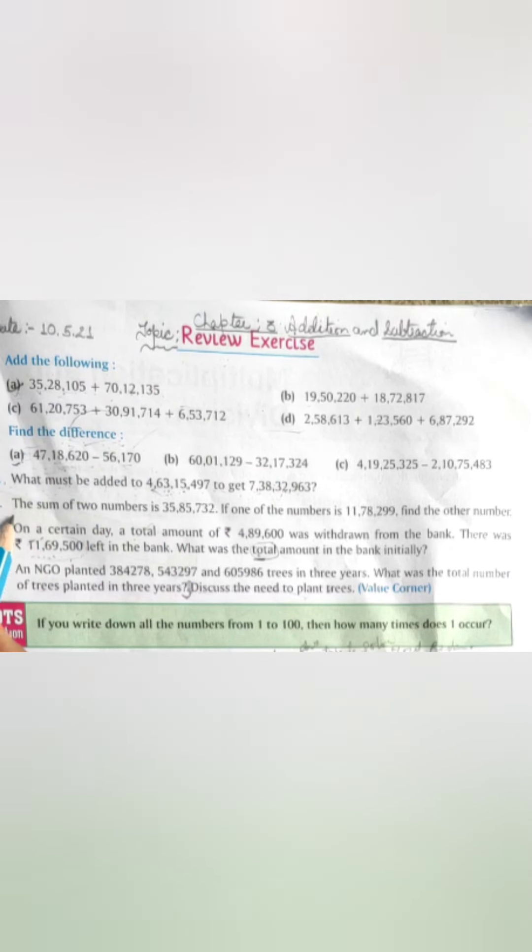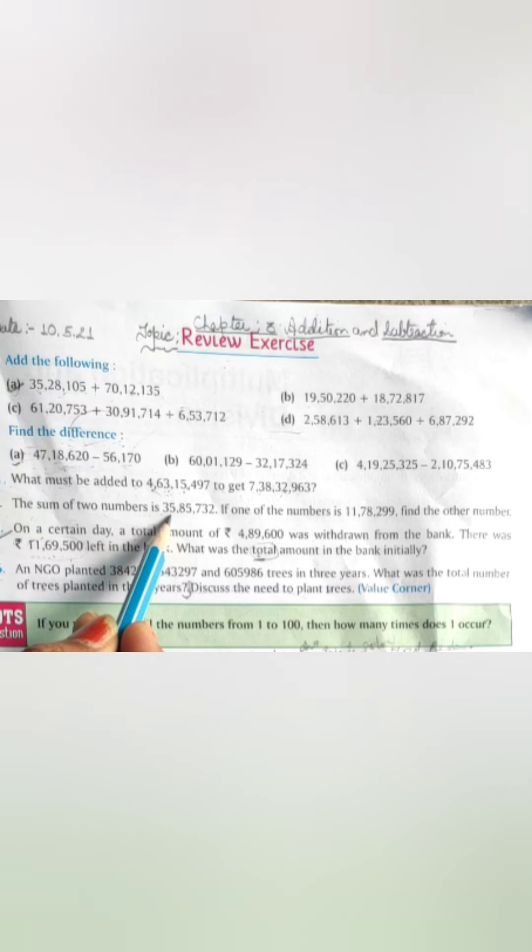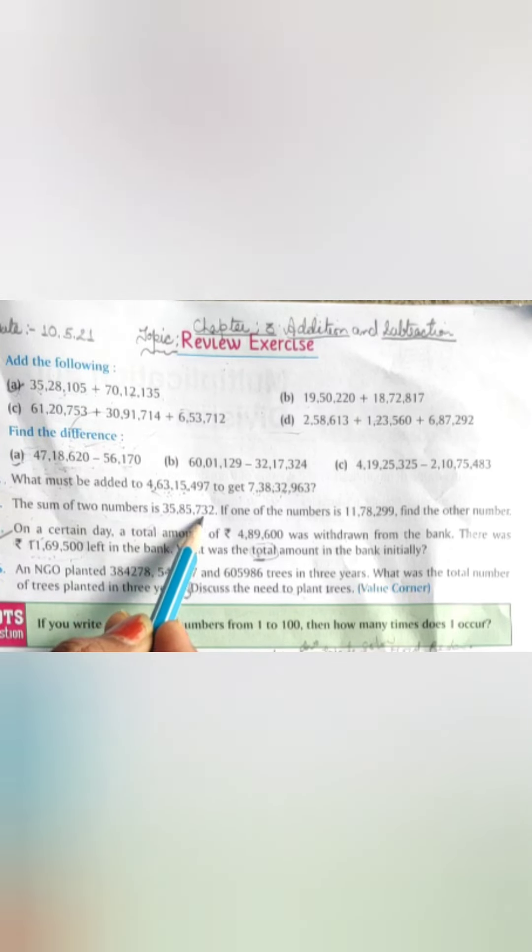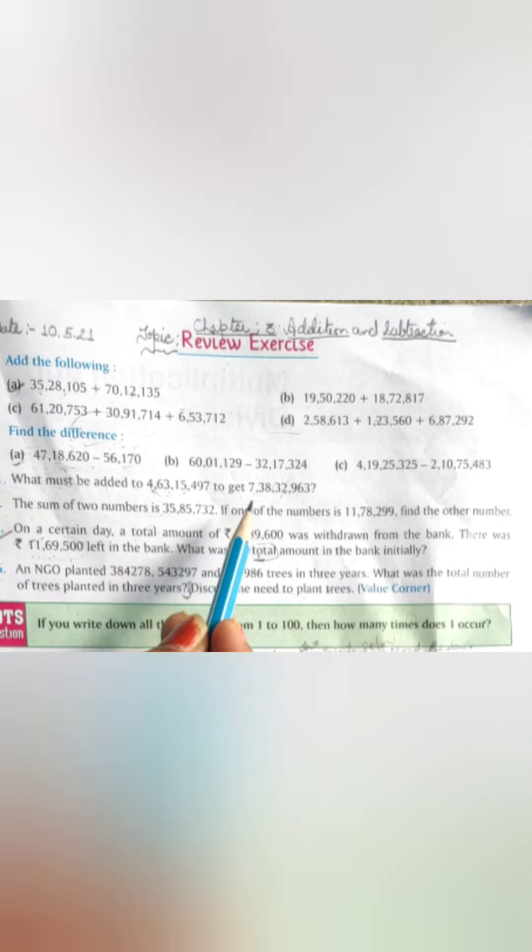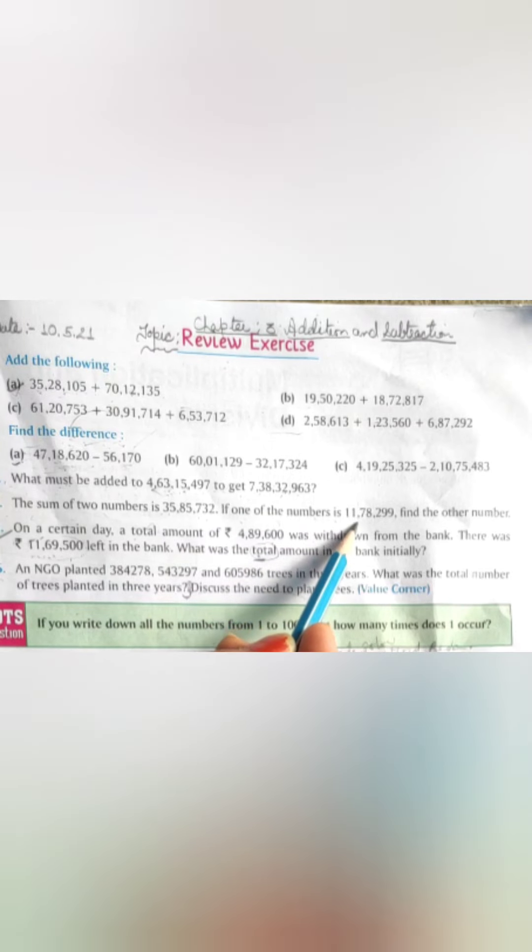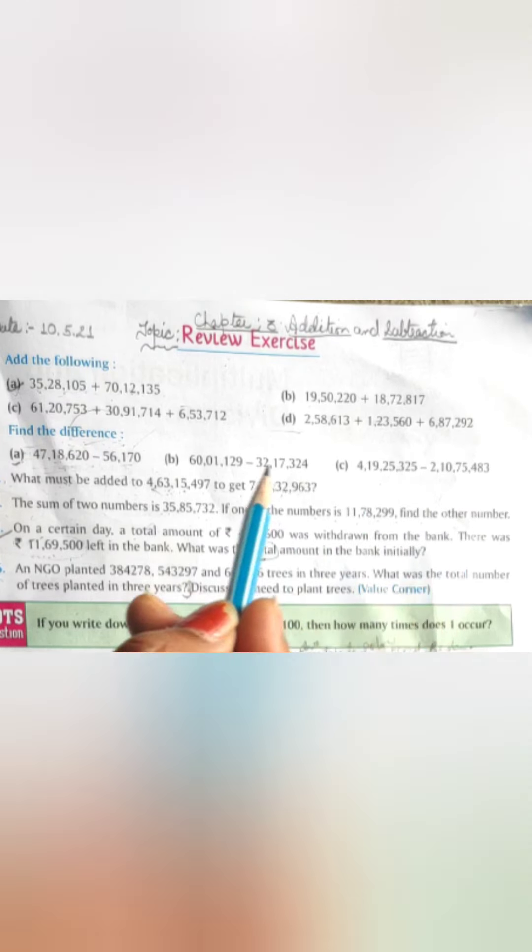Question number 4. The sum of two numbers is 35,85,732. If one of them is 11,78,299, find the other number.